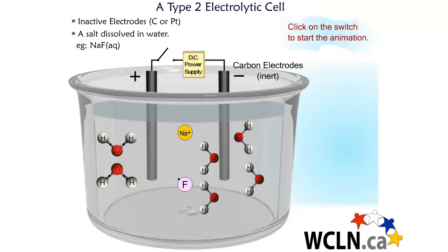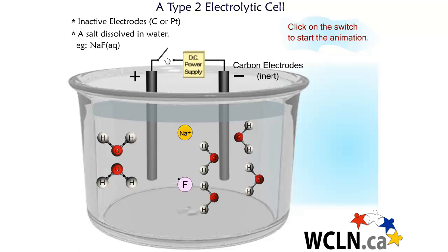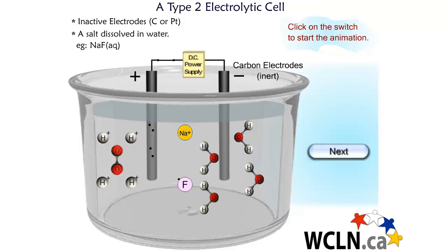In this type 2 electrolytic cell, we have dissolved sodium fluoride salt in water. The cell operates at room temperature. When you click on the switch to close the switch, you will see that water is oxidized at the positive electrode — that's the anode — and you will produce oxygen gas at the anode. Notice that you also produce hydrogen ions at the anode, and that 4 electrons have left the water molecules and are now in the carbon electrode.